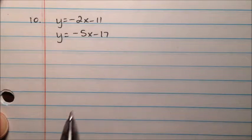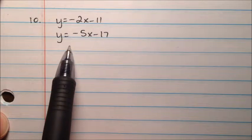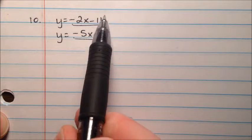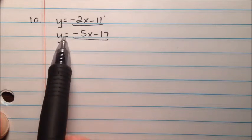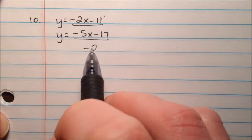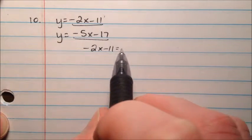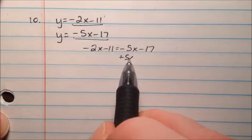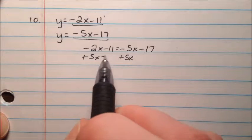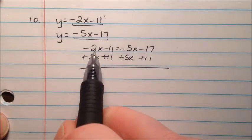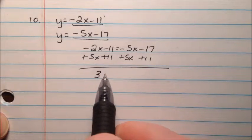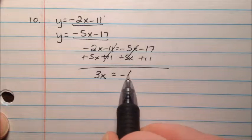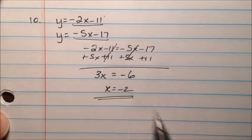Number 10 is another system where each equation has been solved for y, so again we can just take those expressions and set them equal to each other, since they both equal y. So we can say negative 2x minus 11 equals negative 5x minus 17, and then we could add 5x to both sides and add 11 to both sides. So negative 2x and 5x makes 3x, and negative 17 plus 11 makes negative 6, so x is negative 2.